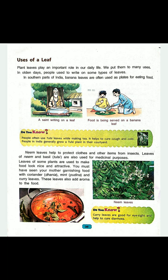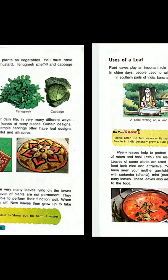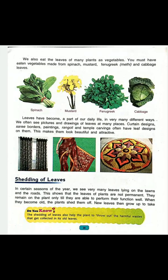Leaves of some plants are used for making food look nice and attractive. Coriander (dhania patta), mint (pudina), and curry leaves are used in food for making it tastier. Curry leaves are good for our eyesight and also help to cure diarrhea. We also eat the leaves of many plants as vegetables, like spinach, mustard, fenugreek, cabbage, etc. These are used in food for our growth.